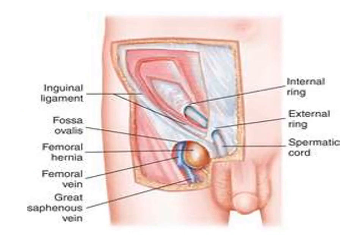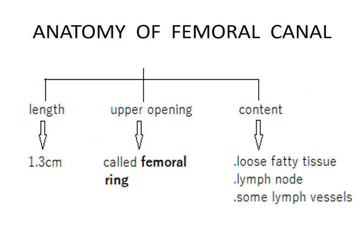Anatomy of the femoral canal: this figure shows the anatomical location of the femoral ring below the inguinal ligament and the location of the femoral hernia. The femoral canal has a length of 1.3 centimeters. It has an upper opening called the femoral ring, and the contents include loose fatty tissue, lymph nodes and some lymph vessels.